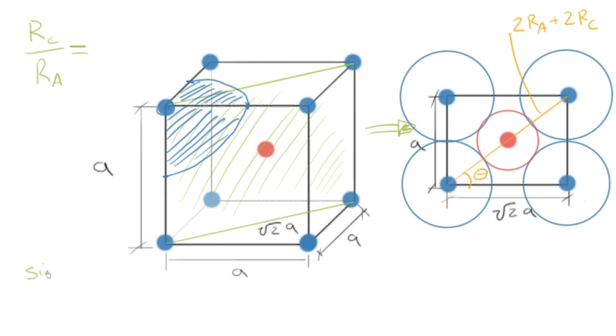So if we take sine of theta, we know that that's equal to this length here, which is two times the radius of the anion. So it's opposite to the radius of the anion, over the hypotenuse there, which is two times the radius of the anion, plus two times the radius of the cation.